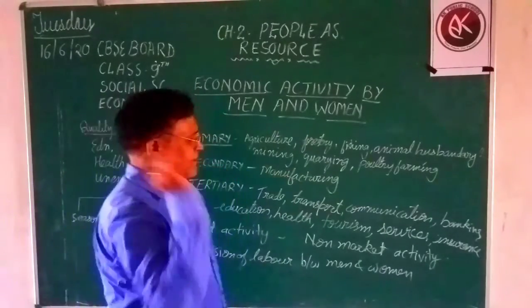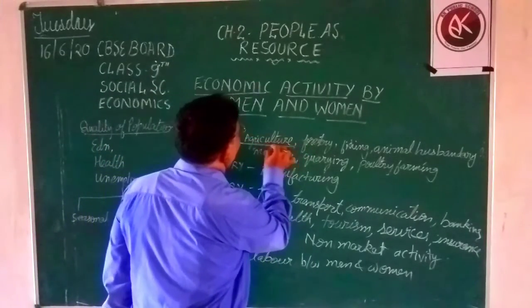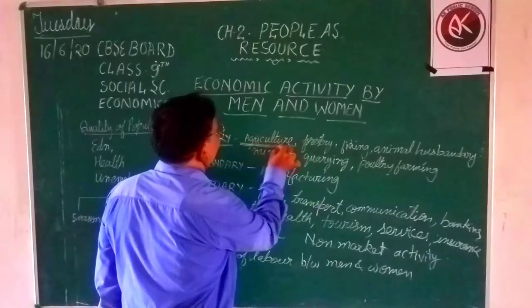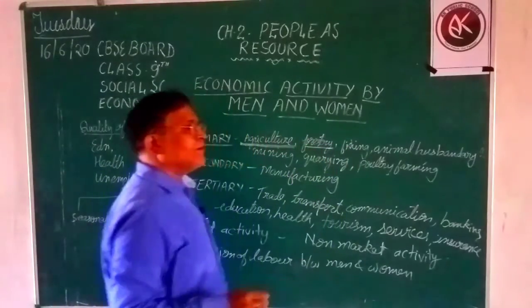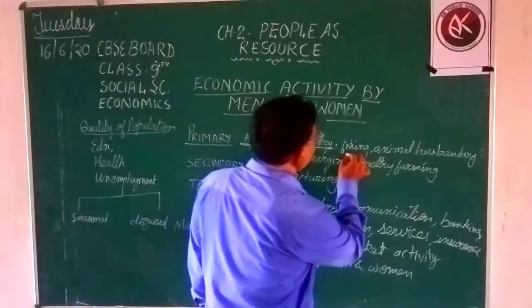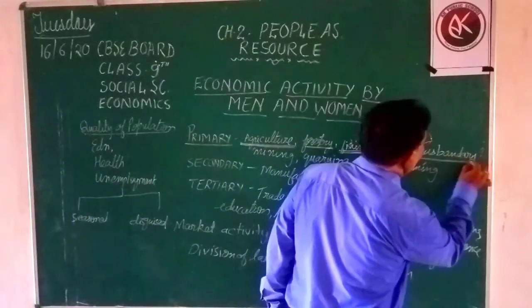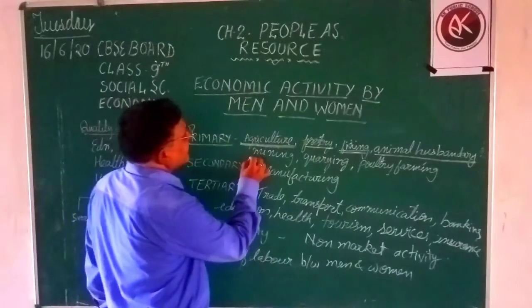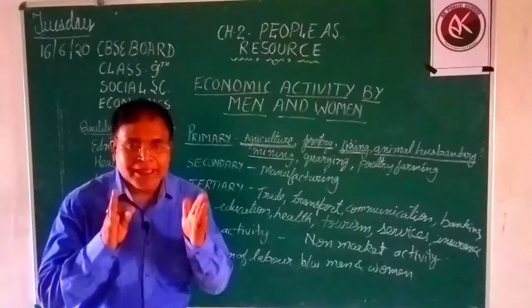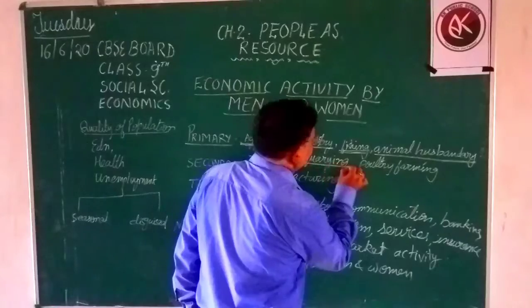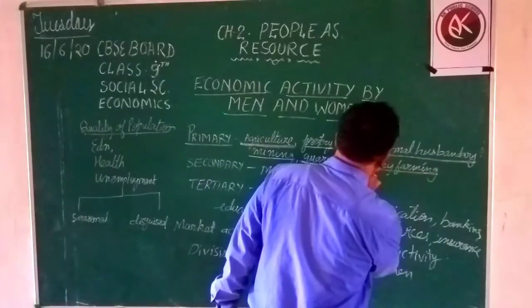In the primary sector, we do many economic activities such as agriculture — we raise crops, cultivate, and harvest them and sell the surplus. Forestry involves using forest products. We also perform fishing and animal husbandry, which is the rearing of animals. Many people are engaged in mining activities such as coal mines, gold mines, and various other types of mines. Another activity is quarrying, related to production activities. Most of them also perform poultry farming.